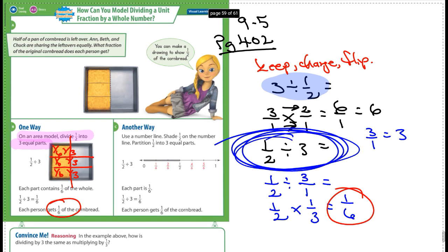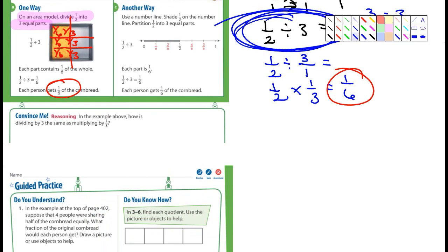Let me move this up a little bit here. Convince me. Let's look at that for a moment. It says, in the example above, how is dividing by 3 the same as multiplying by 1 third? And so you guys can just copy this down here. They're both ways separate a number into 3 equal parts. So copy that down. That one's done for you.